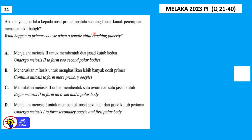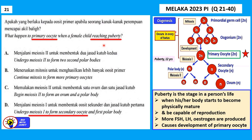Question 21 of the Molecular 2023 Paper 1 trial paper: what happens to the primary oocyte when a female child reaches puberty? Puberty is the time in a person's life when the body starts to physically mature and is capable of reproduction. More FSH, LH, estrogen, and progesterone are produced. Hormones like FSH and estrogen cause the development of the oocyte, which is the immature egg.